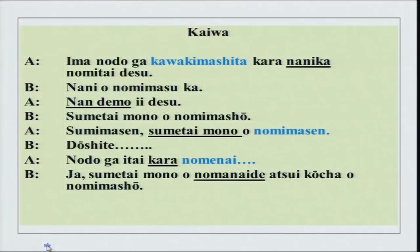Ima nodo ga kawakimashita kara nanika nomitai desu. Nani wo nomimasu ka? Nandemo ii desu. Sumetai mono wo nomimashou. Sumimasen. Dooshite? Nodo ga itai kara nomenai. Here is the conversation — A san to B san no kaiwa desu. Ima nodo ga kawakimashita — nodo is throat, kara is reason. Nanika? Something? Nomitai desu — I want to drink. The throat is dry, thus I want to have something.